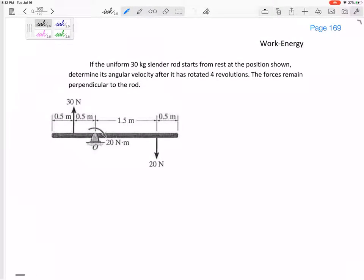How about this problem? We've got a uniform 30 kilogram slender rod. It starts from rest at the position shown. Determine its angular velocity after it has rotated four revolutions, and these forces, this 30 and 20, remain perpendicular to the rod. This is a very important problem to understand. Choose conservation of energy.